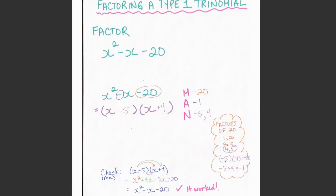If I have -5 and I times it by positive 4, I get -20, which is what I wanted. If I take -5 and I add it to 4, I get -1, which is what I wanted. So the numbers that work in this situation should be -5 and 4 because they multiply to -20 and add to -1.